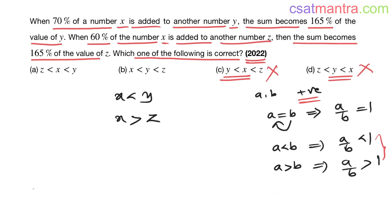Since x/z = 65/60 is greater than 1, x is greater than z. From the second statement, x is greater than z. Combining both results: x is less than y, and x is greater than z. This is our answer.